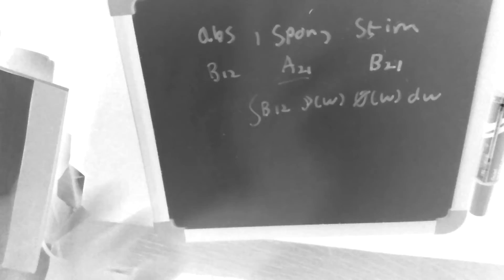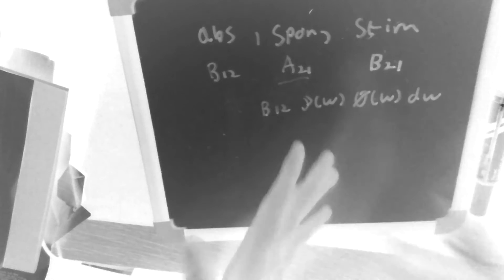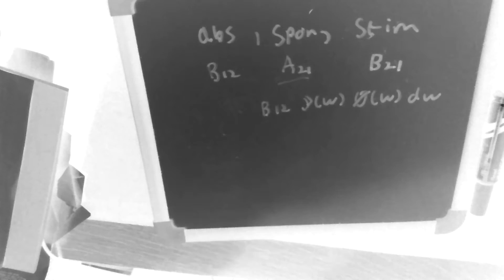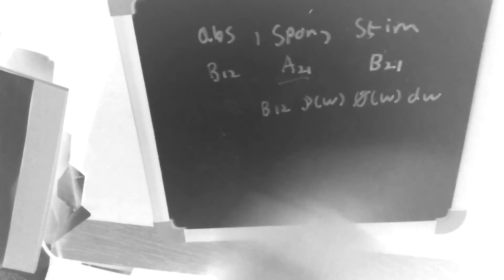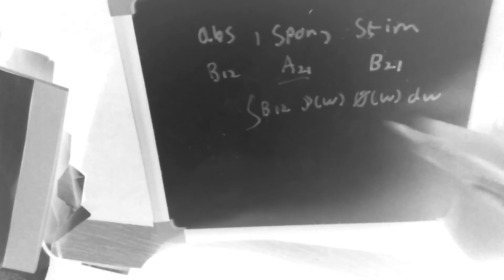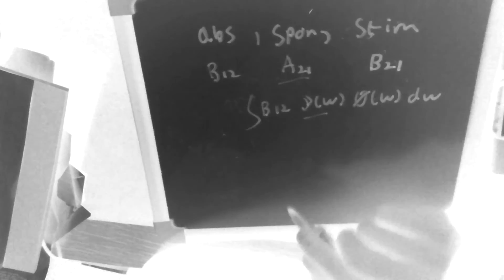And if you want to take the integral away, then this describes the probability that it will move from level 1 to level 2 by absorbing a photon within a range of omega given by d omega. And as such, we'll put the integral back in.